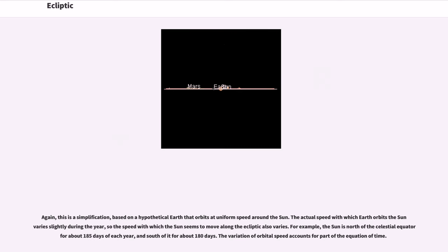A day on Earth is therefore 24 hours long rather than the approximately 23 hour 56 minute sidereal day. Again, this is a simplification based on a hypothetical Earth that orbits at uniform speed around the Sun. The actual speed with which Earth orbits the Sun varies slightly during the year, so the speed with which the Sun seems to move along the ecliptic also varies. For example, the Sun is north of the celestial equator for about 185 days of each year and south of it for about 180 days. The variation of orbital speed accounts for part of the equation of time.